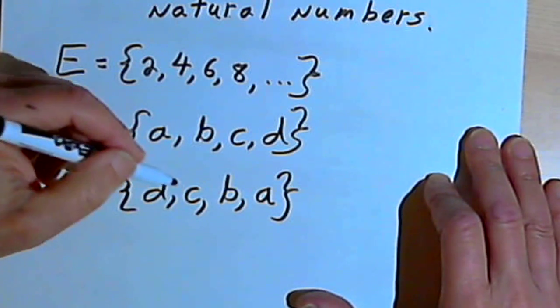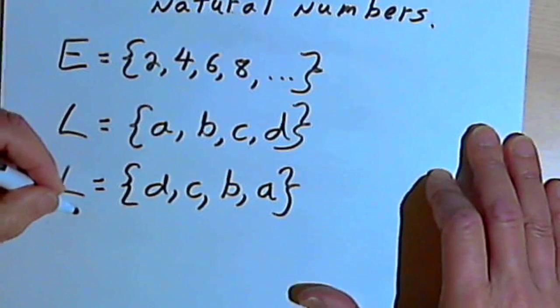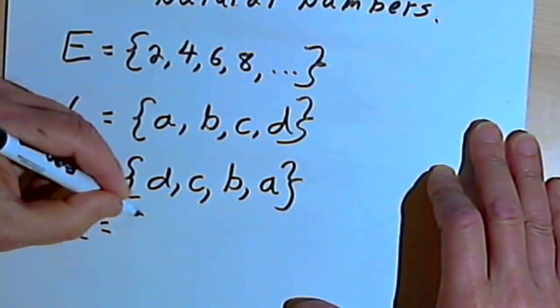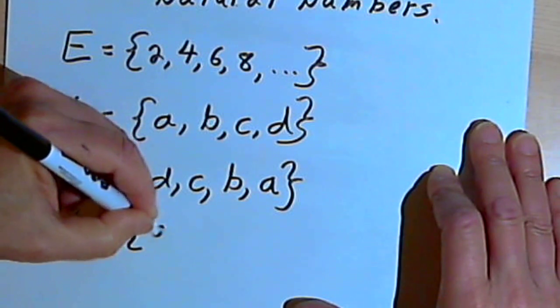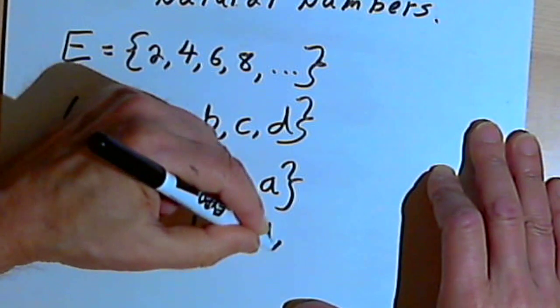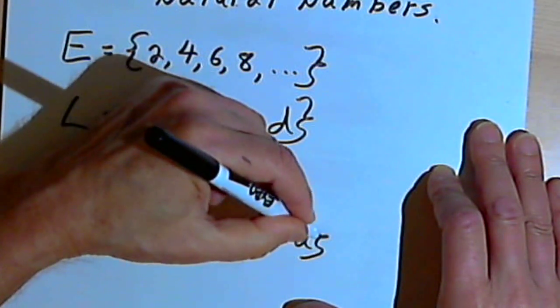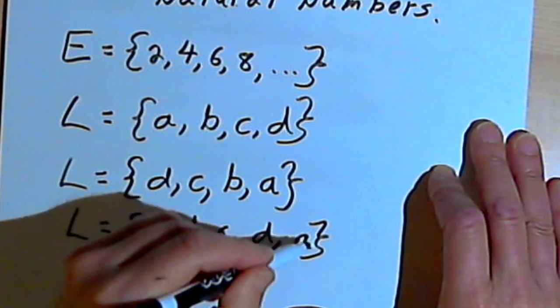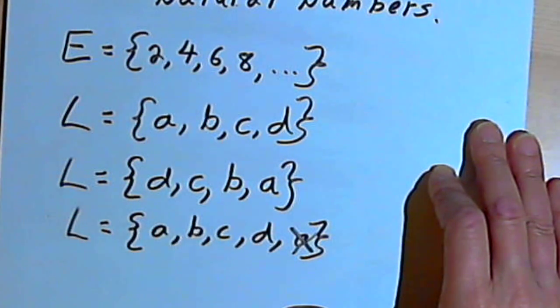I'm never going to repeat the same element twice. I'm not going to write something like L equals a set with the elements A, B, C, D, and A again. So elements will not be repeated twice, but the order doesn't matter.